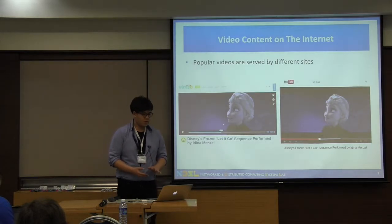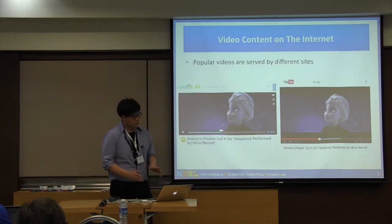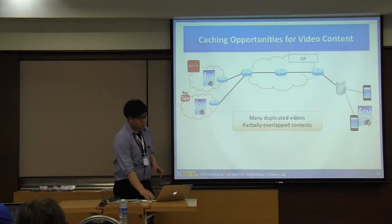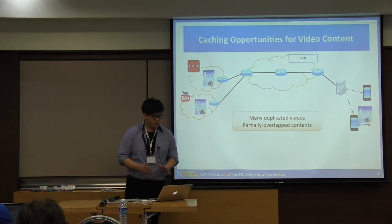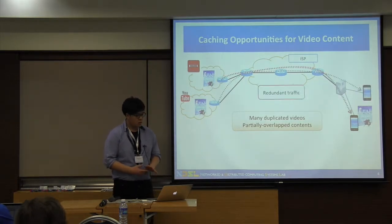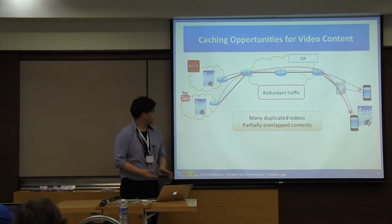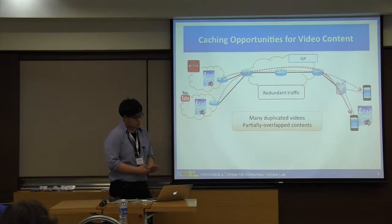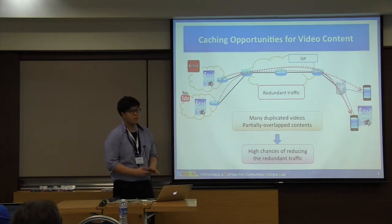Another interesting thing is that there are popular videos served by different sites. For example, as the figure shows, we can see the same video content on YouTube and other sites. People who download or watch the same video from different sites results in lots of redundant traffic in the network. Based on these facts, there are lots of duplicate videos and lots of partially overlapping content on the internet.